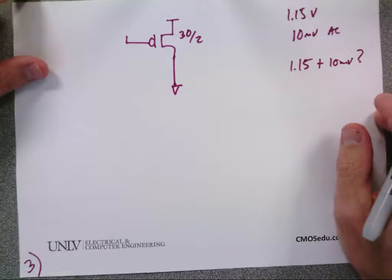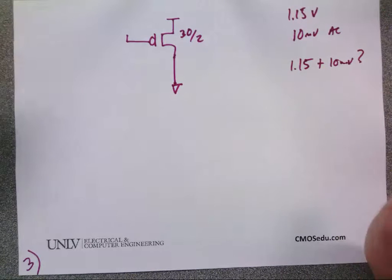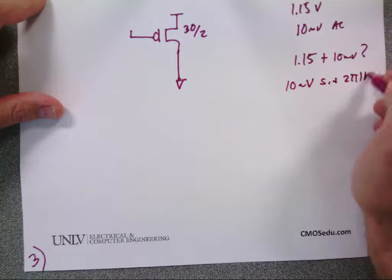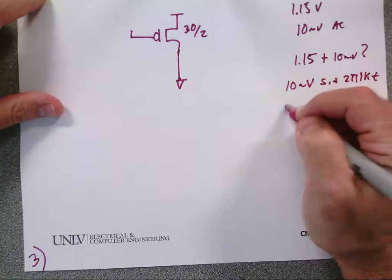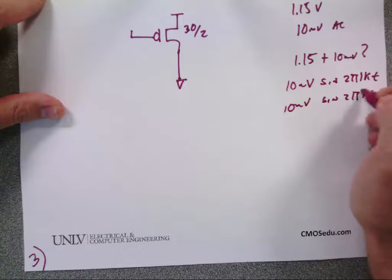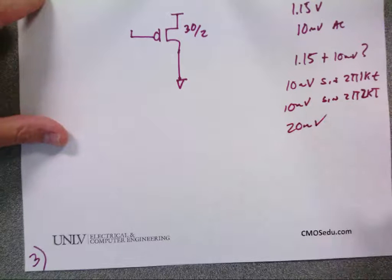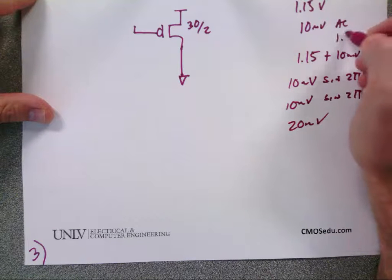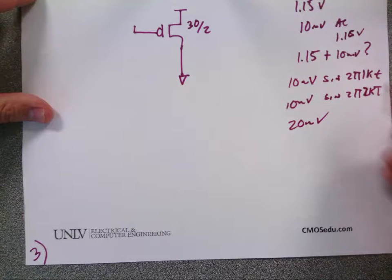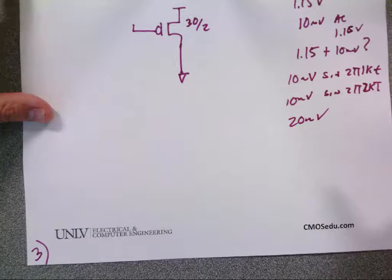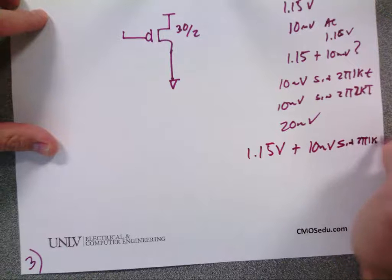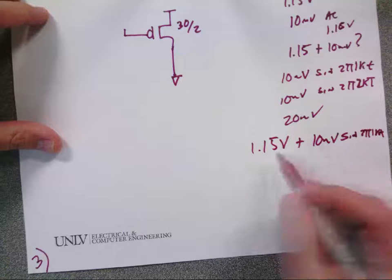Can I add a DC component with an AC component? Can I take two sinusoids at different frequencies, add them together, and say the result is 20 millivolts? No — that's ridiculous. You can't combine a DC and AC into one number, and you can't add two sinusoids at different frequencies into a single value. The correct way is to write 1.15 V plus 10 mV·sin(2π·1k·t).